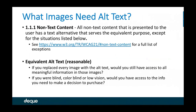A classic gray area in WCAG 2.0 is 1.1.1 non-text content. The requirement reads: 'all non-text content that is presented to the user has a text alternative that serves the equivalent purpose.' How do we measure that the text alternative serves the equivalent purpose of an image? From a minimum reasonable perspective: replace every image with its alt text — do you still have access to all the meaningful information? Would a blind, colorblind, or low vision user have access to the information needed to make a decision or do their job?